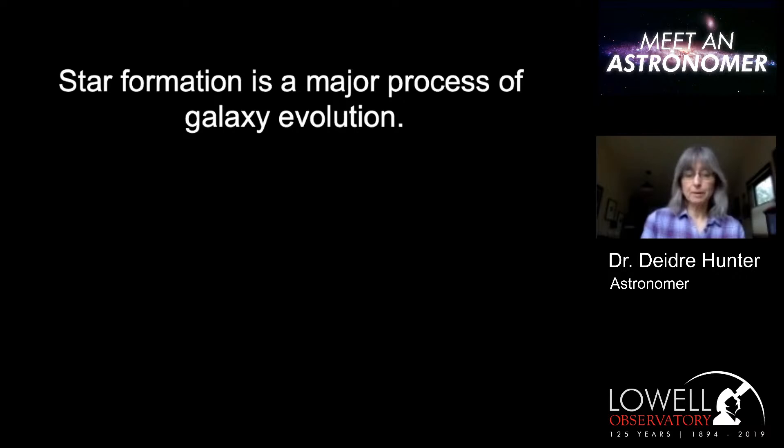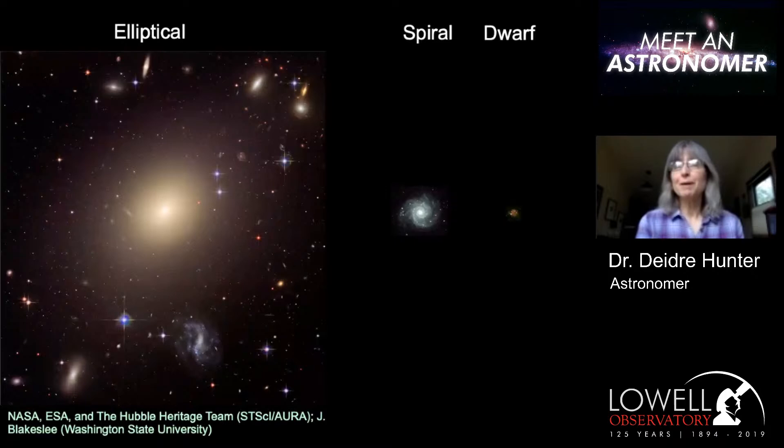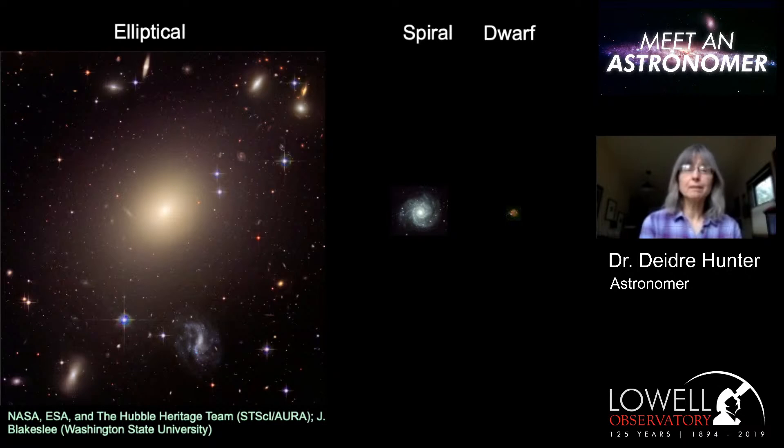Let's talk for a few minutes about galaxies. There are three basic types: elliptical galaxies, spirals, and dwarf irregulars. These pictures illustrate these three types and show roughly the typical relative sizes of galaxies.